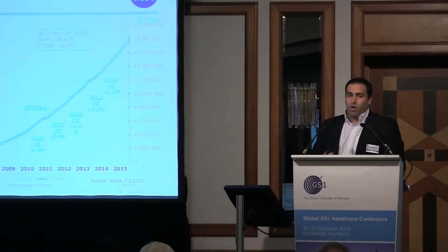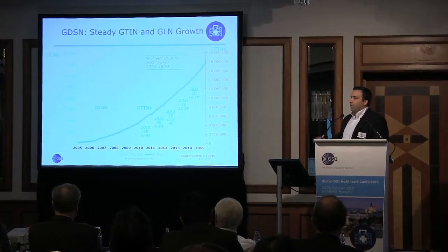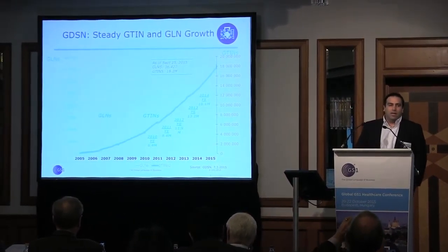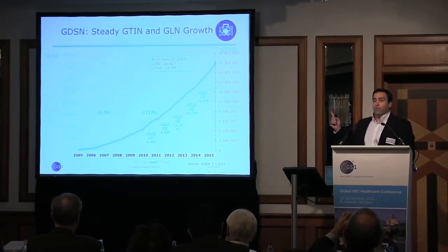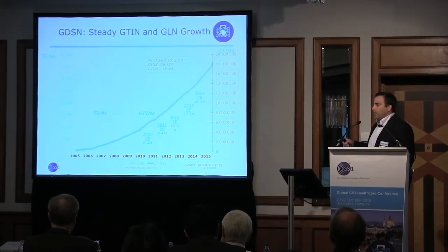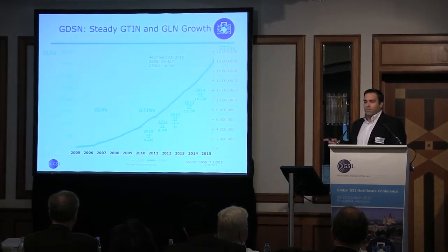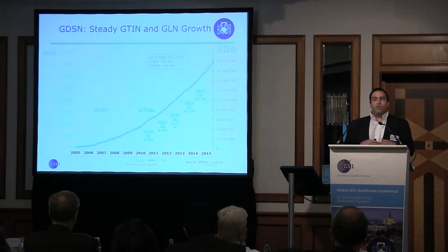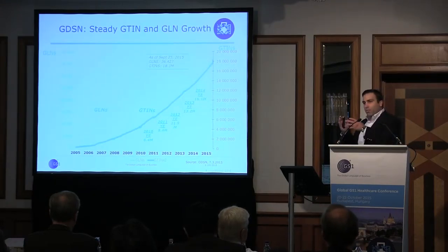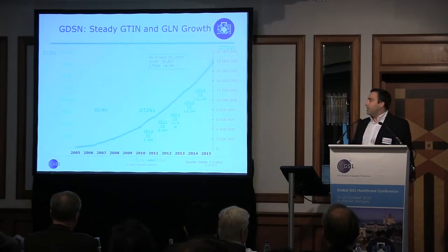We've seen an enormous amount of increase — this is what we call a hockey stick chart — that shows the increase of information being put through the data pools on a consistent level. And that increase in information is only growing at an exponential level right now. It's not just because of retail initiatives or other initiatives in industries like food service, but it's also because of the commercial and regulatory aspects going on in the healthcare sector. That's driving an enormous amount of demand for utilization of this process to drive better product information to providers, GPOs, and other organizations globally.